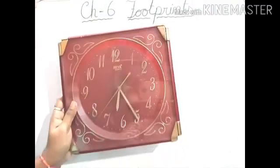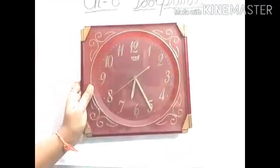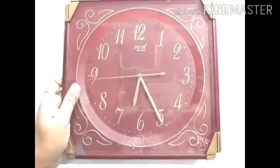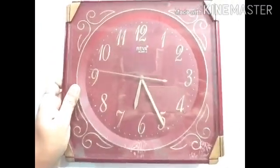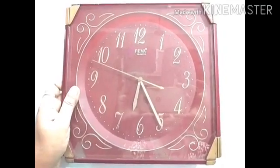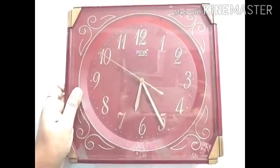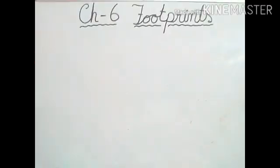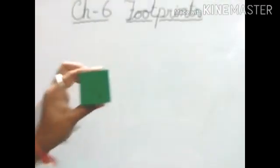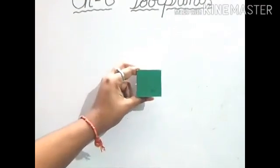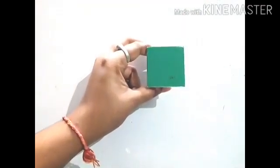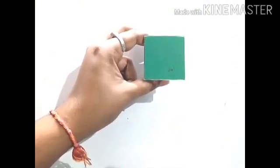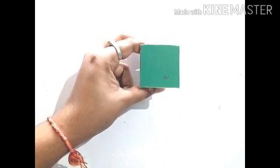Can you see this watch? What is the shape of this watch? Yes, it is a square. Very good. Now let us see the next one. This is very small but I think you can see this one. This is also what? Yes, this is also square shape. Very good.